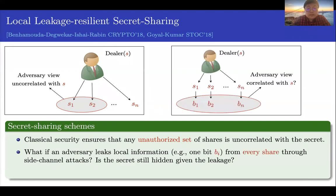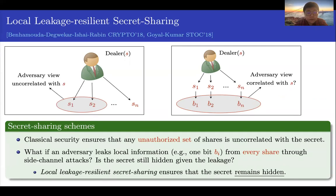What if the adversary leaks local information from every secret share? For example, it learns a bit Bi from every secret share Si. So is the joint distribution of the leakage correlated with the secret S or not? Locally leakage-resilient secret sharing schemes ensure that the joint distribution of the leakage is uncorrelated with the secret S.